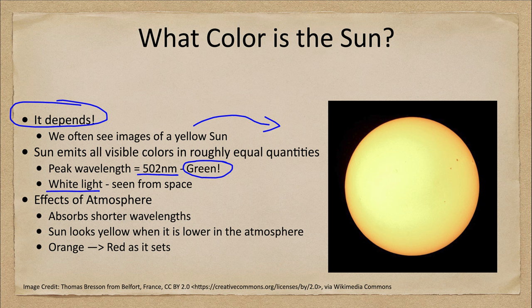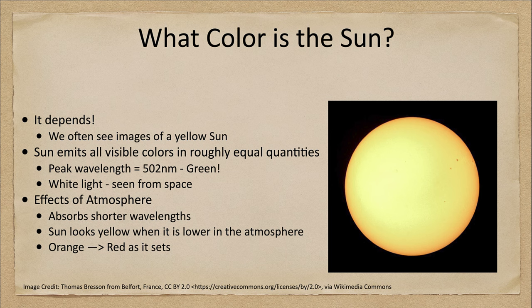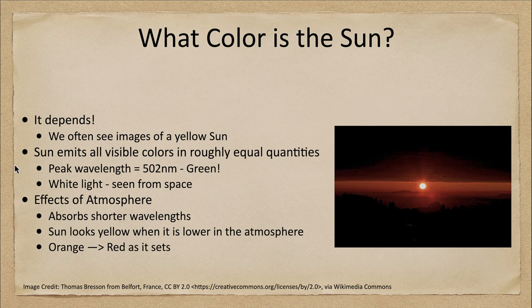Our atmosphere is what affects this a bit. We know this if we look at the Sun at rising or setting. What does our atmosphere do? The atmosphere absorbs shorter wavelengths — things like the blues and the greens. They get absorbed. So when the Sun is lower in the atmosphere, it is going to look very red in the sky.